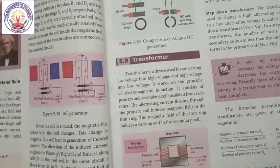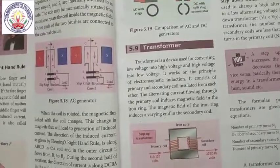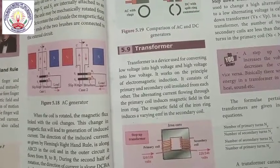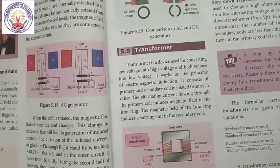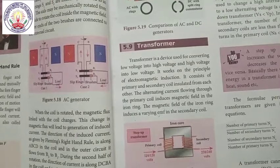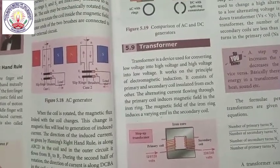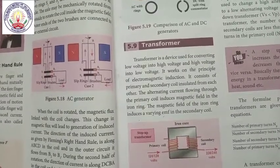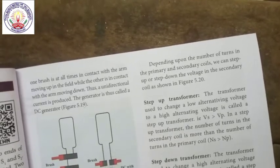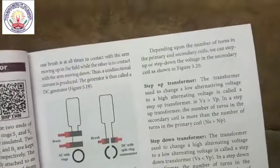Transformer. A transformer is a device used to convert low voltage into high voltage and high voltage into low voltage. It works on the principle of electromagnetic induction. It consists of primary and secondary coils insulated from each other. The alternating current flowing through the primary coil induces a magnetic field in the iron core. The magnetic field of the iron core induces a varying EMF in the secondary coil. Depending on the number of turns in the primary and secondary coils, we can step up or step down the voltage.